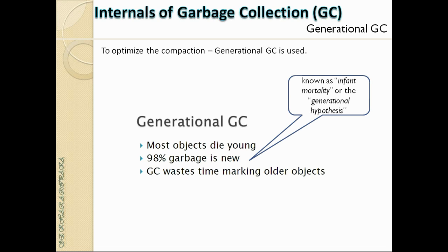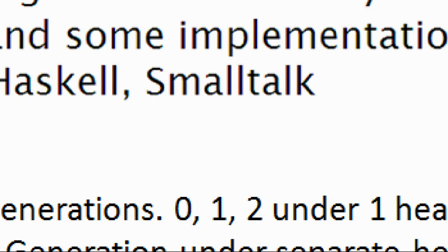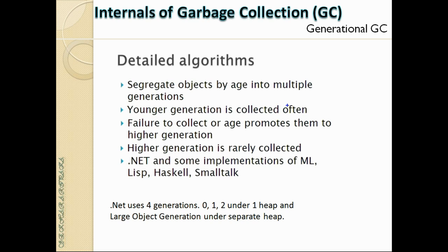In generational GC, objects are segregated by age into multiple generations. In .NET there are effectively four: three normal generations plus a special large object heap. When an object is created, it is placed into generation 0. If it survives the first GC collect cycle, it is promoted to generation 1. If it survives again, it is promoted to generation 2.